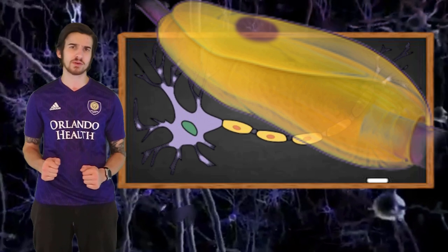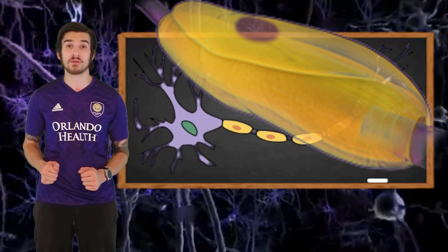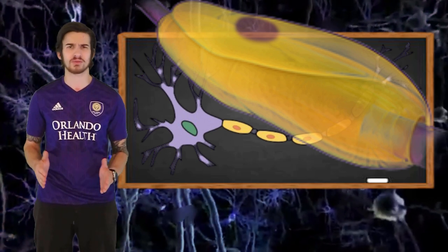For neurons outside of the central nervous system, we have a type of glial cell known as a Schwann cell. It's a fun one to say.